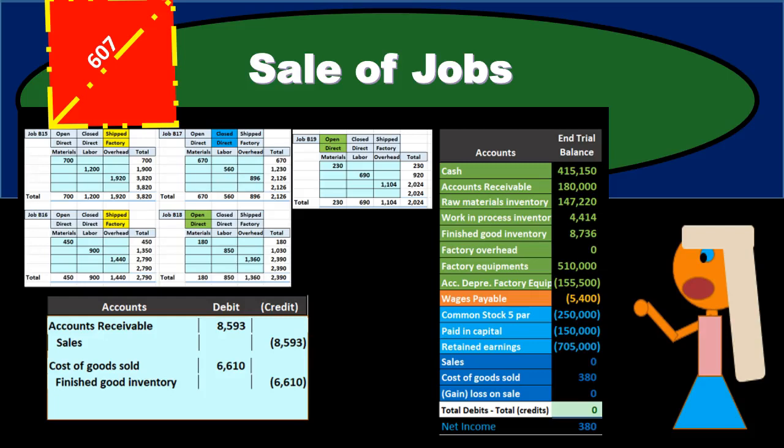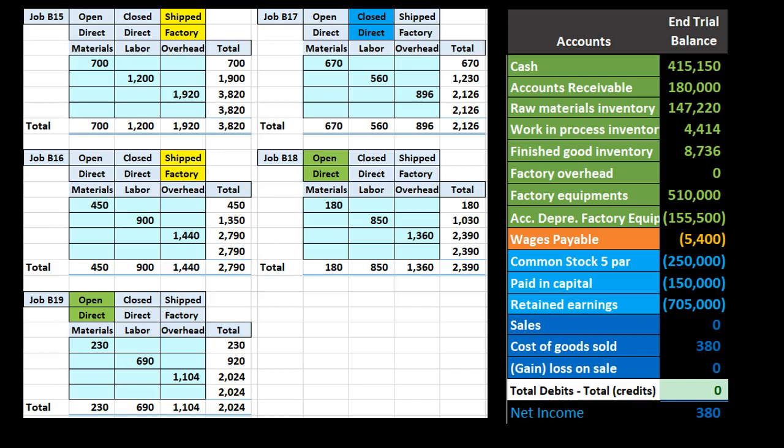In this presentation we will record the journal entry to record the sale of jobs, the related reduction in finished goods inventory, and cost of goods sold.